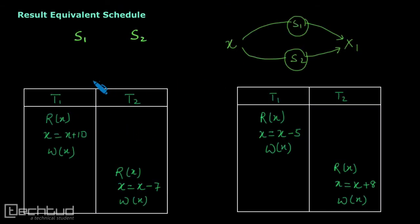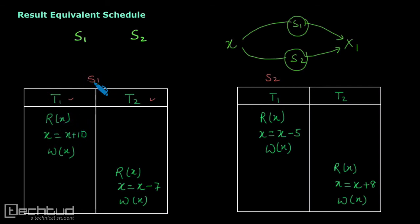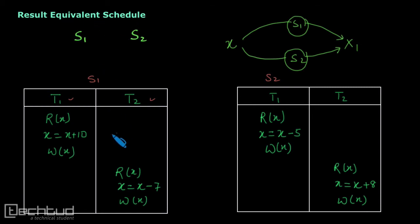Here we have been given two schedules. This is schedule S1, which contains two transactions T1 and T2, and this is schedule S2, which also has two transactions. Now, in schedule S1, transaction T1 has operations: read X, then increment X by 10, then write X back. To check whether these two schedules are result equivalent, we need to start with a database state and execute the schedules to see whether in both cases we get the same output.